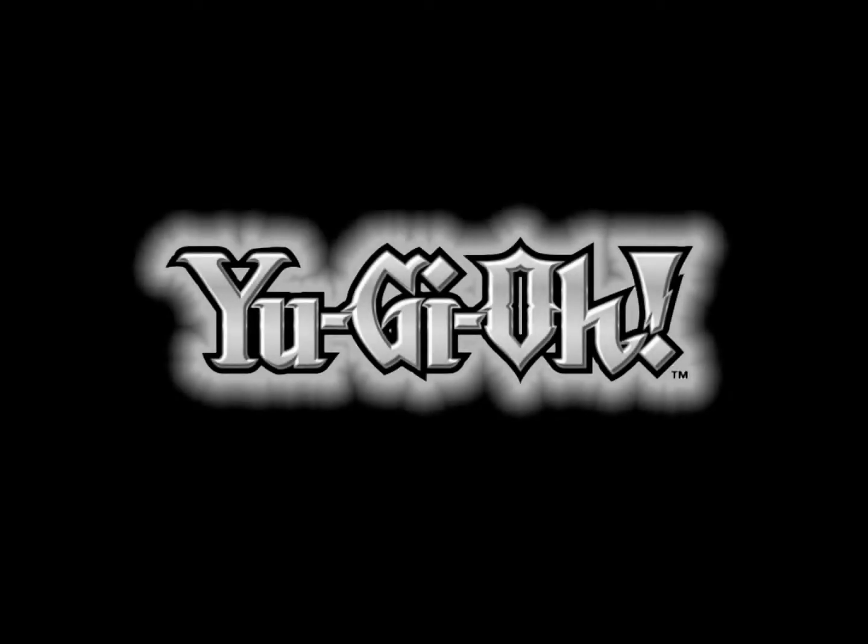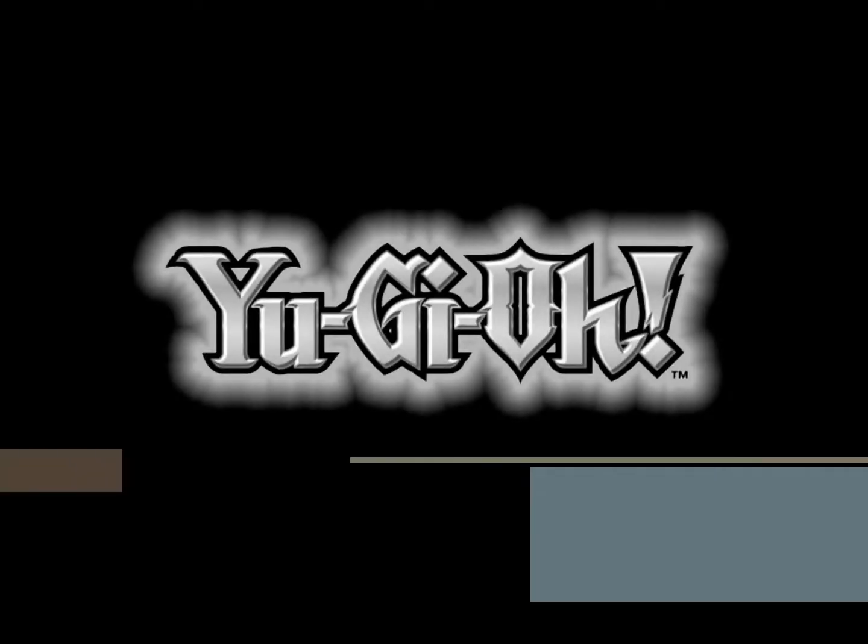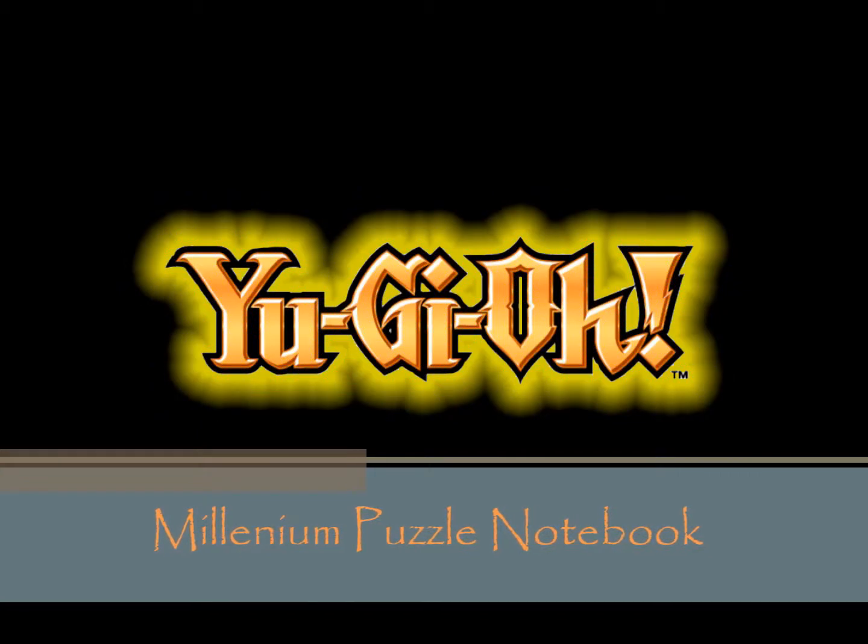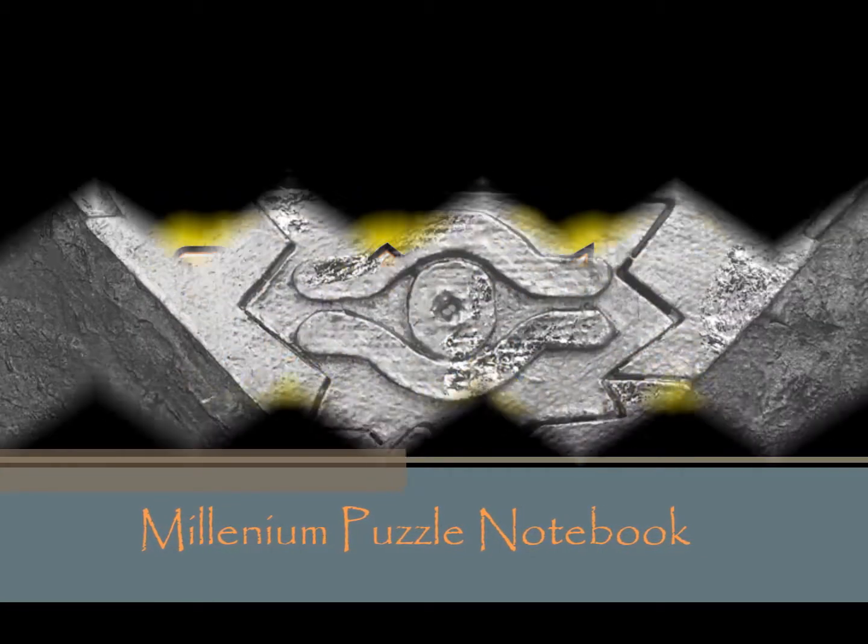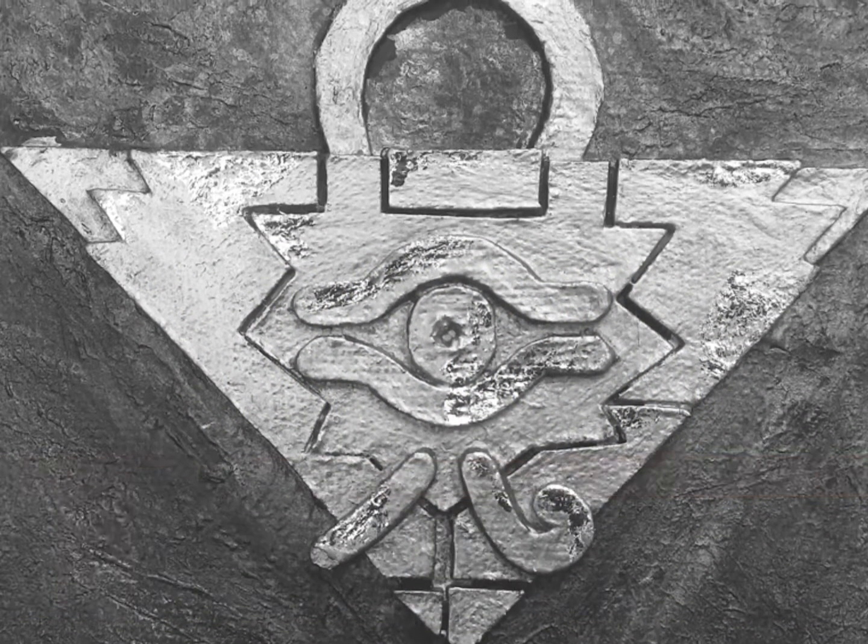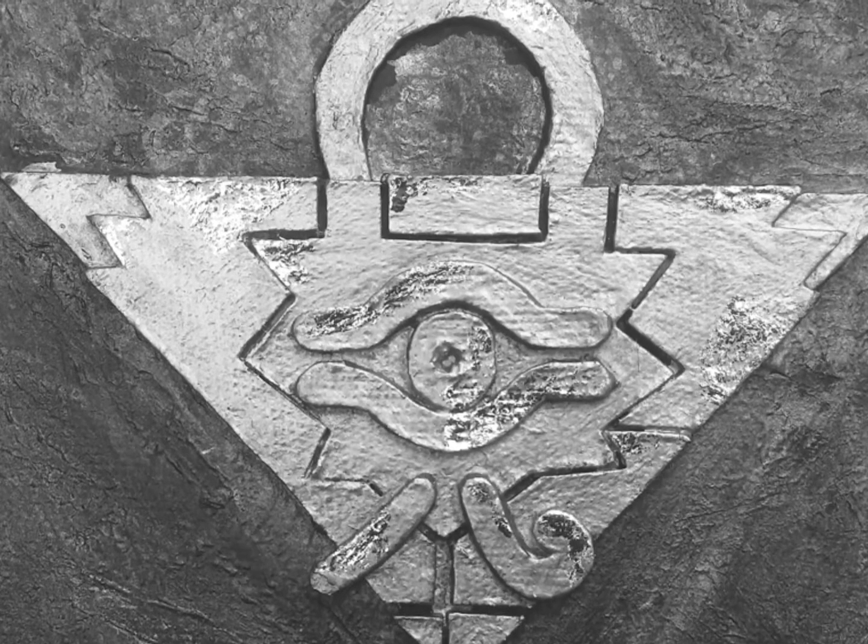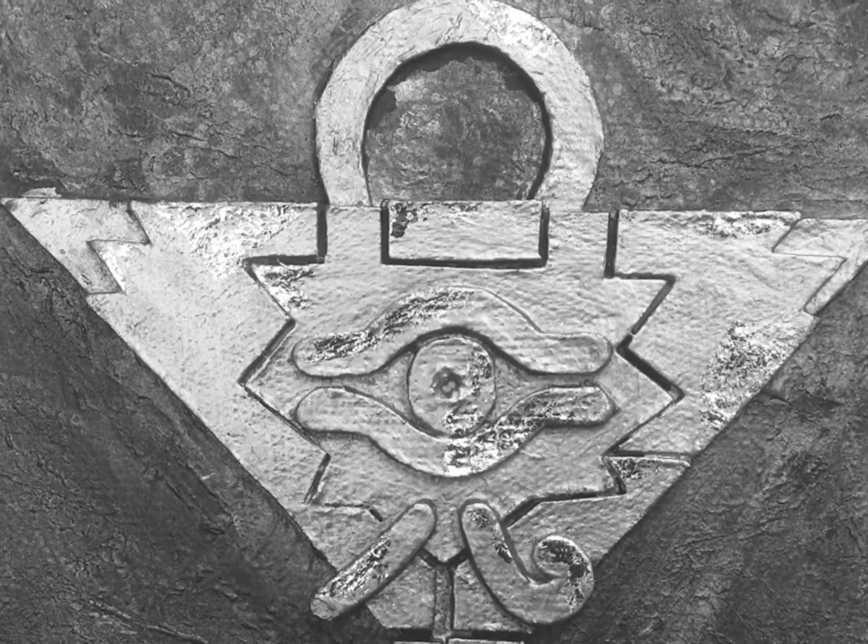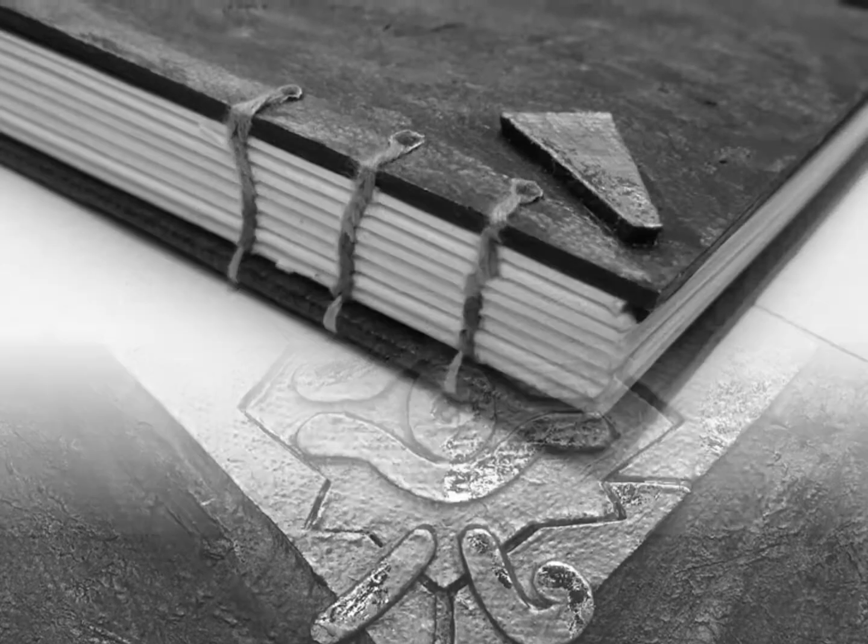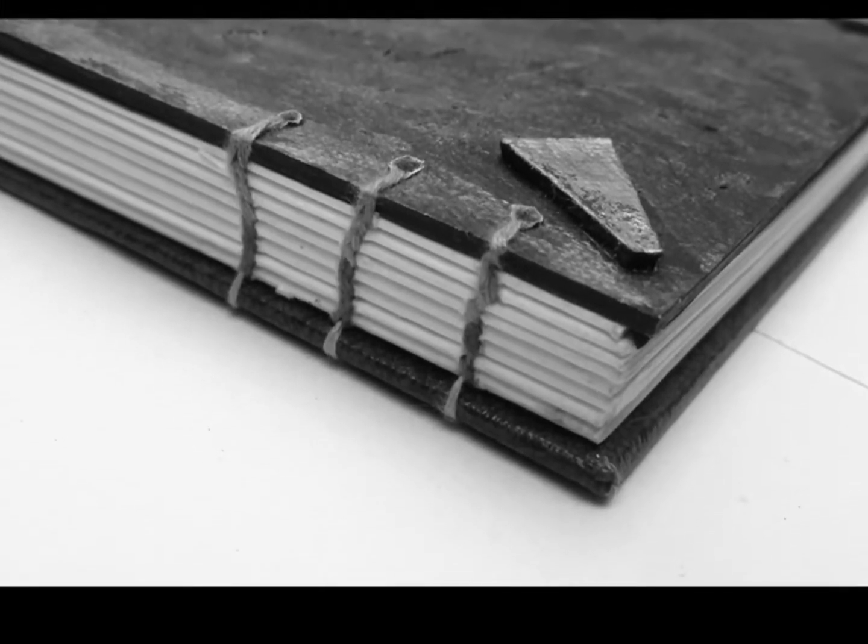Long ago, when the pyramids were still young, Egyptian kings played a game of great and terrible power. But these shadow games erupted into a war that threatened to destroy the entire world, until a brave and powerful pharaoh locked the magic away.